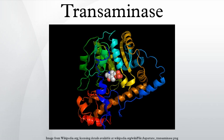Tissue transaminase activities can be investigated by incubating a homogenate with various amino-ketoacid pairs. Transamination is demonstrated if the corresponding new amino acid and ketoacid are formed, as revealed by paper chromatography. Reversibility is demonstrated by using the complementary keto-amino acid pair as starting reactants. After the chromatogram has been taken out of the solvent, it is then treated with ninhydrin to locate the spots.